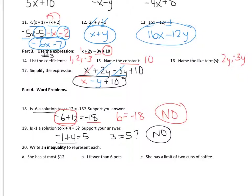Number twenty — write an inequality. An inequality is less than, greater than, less than or equal to, or greater than or equal to. She has at most $12. I'm always going to write my variable on the left-hand side. At most — can you have $12? Yes, so you put an equal sign. Can you have more than $12? No, you have to have less than or equal to $12.